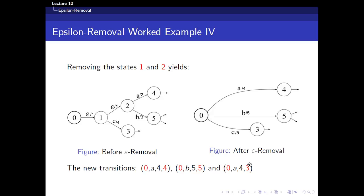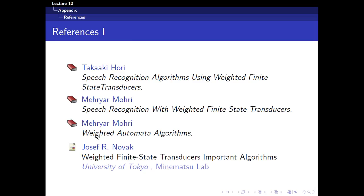So this is what you end up with — your initial acceptor and the final Epsilon-free acceptor. It's equivalent to throwing in states 1 and 2, merging them together, with weights calculated accordingly using the weighted Epsilon closure. This is a very simple idea of how the Epsilon Removal algorithm actually works. If you want to know more, you can refer to Joseph R. Novak's slides, known as 'Weighted Finite State Transducer Important Algorithms' from the University of Tokyo, which has a very detailed explanation and example. I hope you've enjoyed this lecture, and I'll see you again next time.